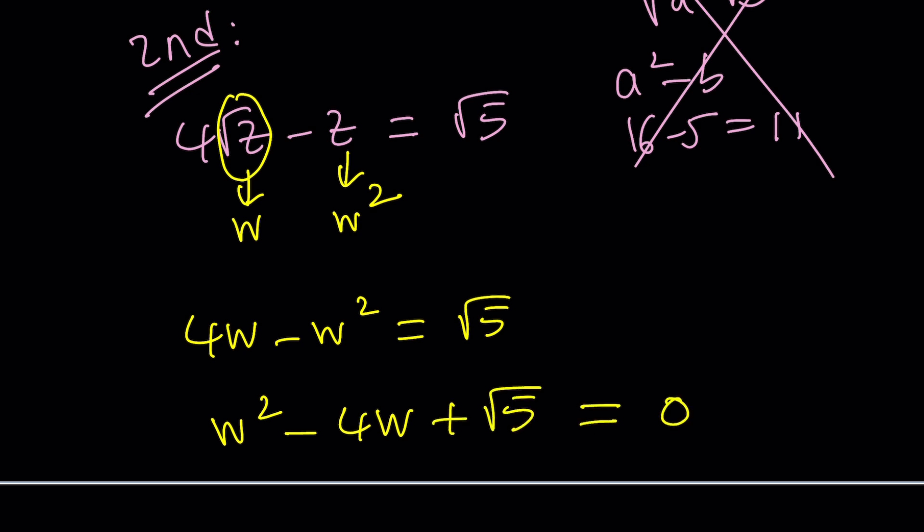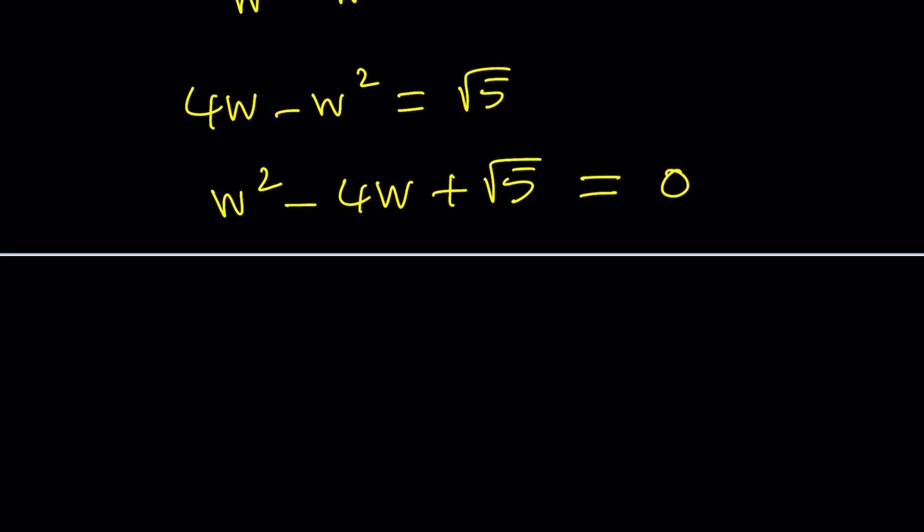And then by using the quadratic formula, we could find the values of w, hopefully, right? It will be -b ± √(b² - 4ac), which is 16 - 4√5.